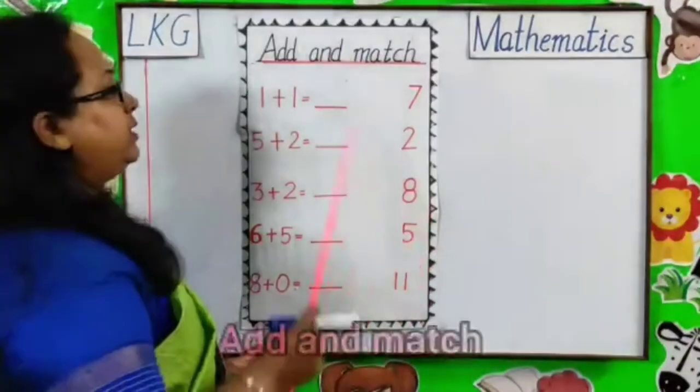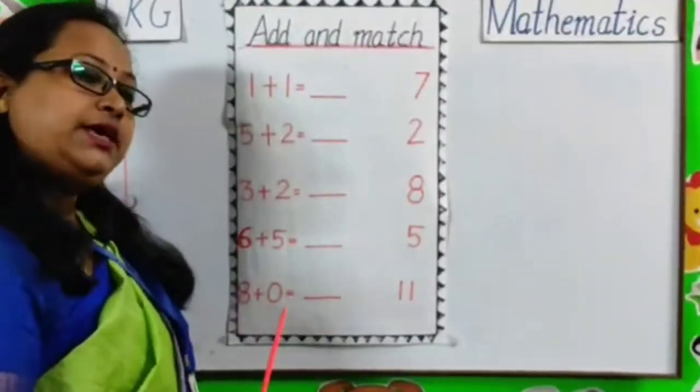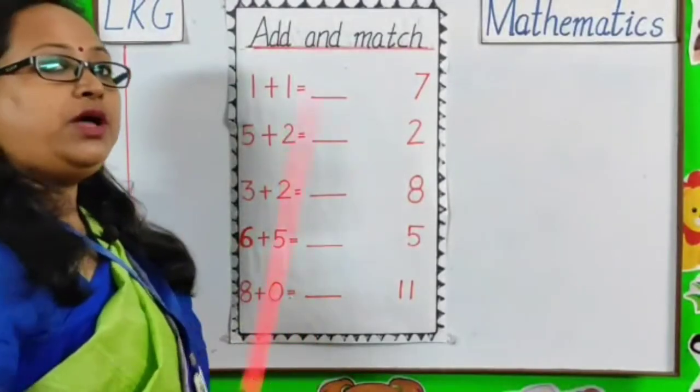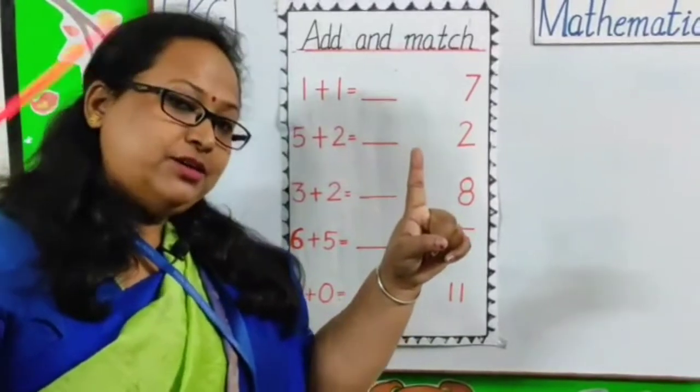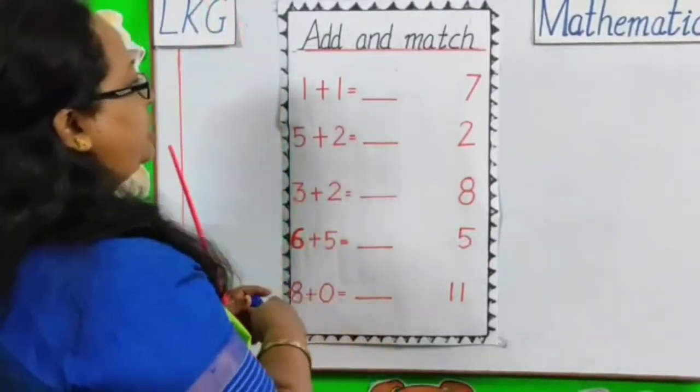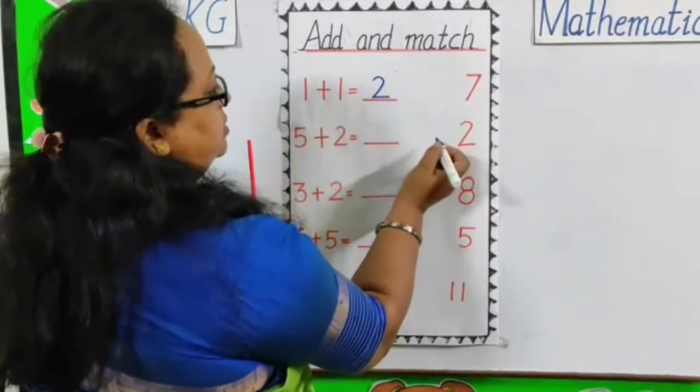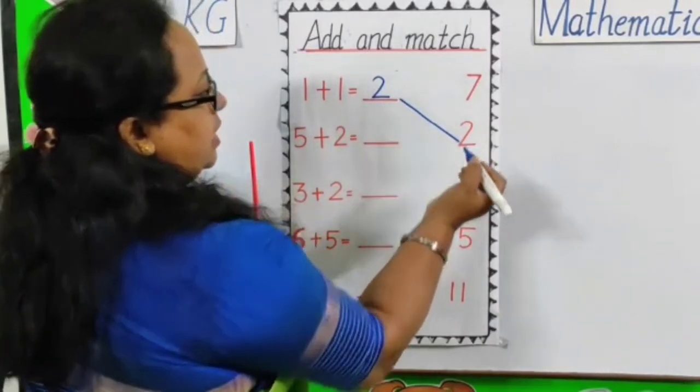Next topic. Add and match. Again, the same method. First question is 1 plus 1. So, 1 in my mind and 1 finger. So, 1 after 1, 2. So, 1 plus 1 is equal to 2. We have to write the answer and match to its correct answer.